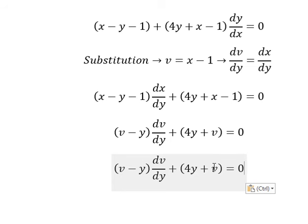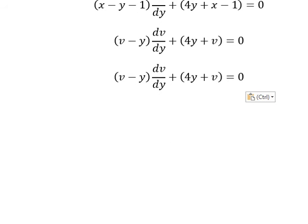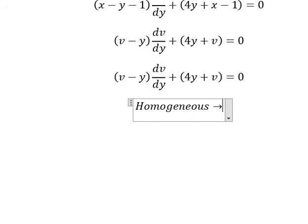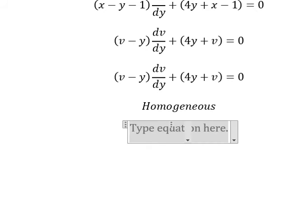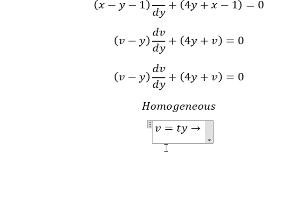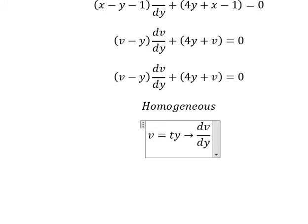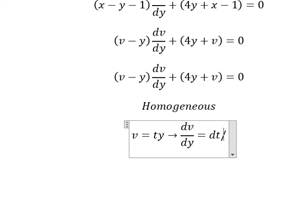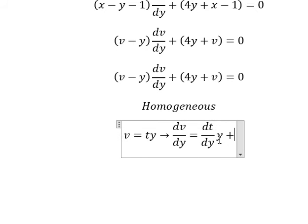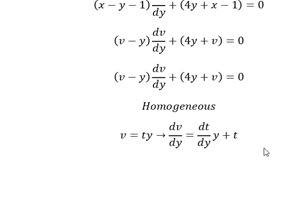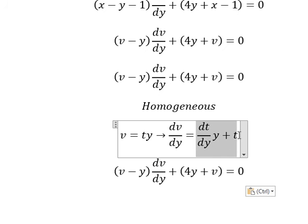Now we can see that we have v and y, v and y — they are homogeneous. So I put v equals ty. Taking the first derivative of both sides, dv over dy equals dt over dy multiplied by y, plus t. So we substitute this in.